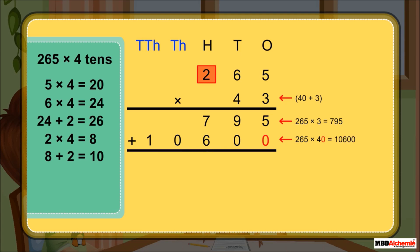Now add the products obtained. That is, add 795 and 10,600. This gives 11,395.